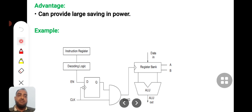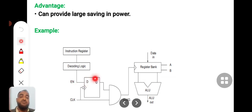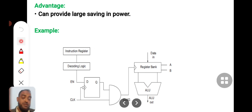The advantage of module level clock gating is that it can provide large savings in power. In the example circuit, the instruction register and decoding logic together produce the enable signal. This is a level-sensitive latch — whenever the enable signal is high, the gate output is high, and the clock is supplied to the AND gate and passed to the next block during the time the enable signal is high. Whenever you make the enable signal zero, the clock stops and the block becomes non-functional. This is how clock gating at module level can be done.